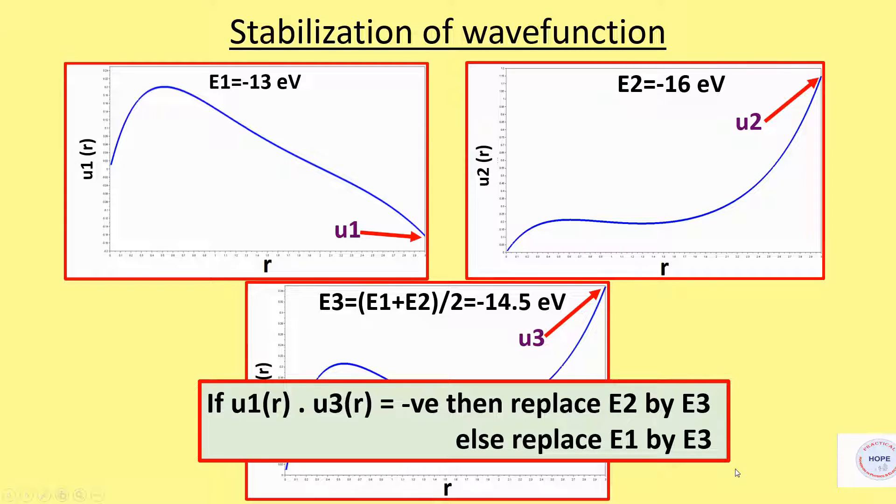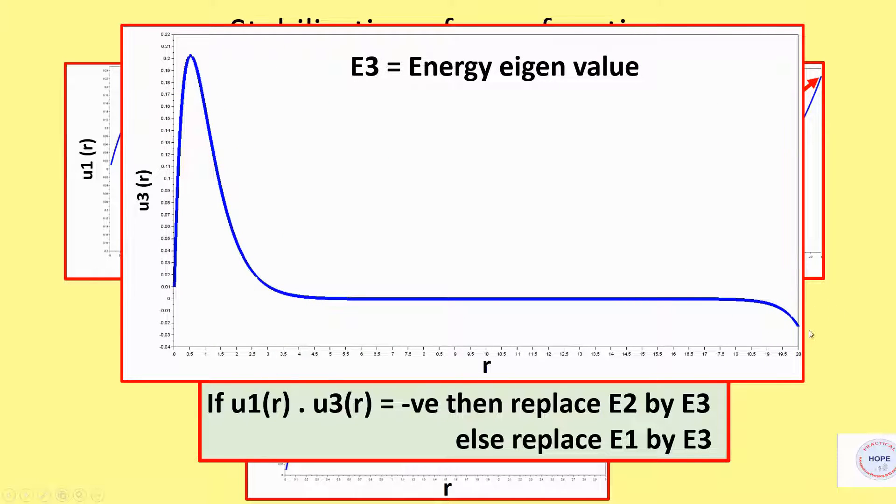Finally, after doing all this, we will get the final solution. The curve will eventually approach minus or plus infinity, but it has been stabilized for some range of r. This value of E3 will be the energy eigenvalue. Now let's implement it in Scilab. This time we are using version 6.1.0. Open Scionotes.